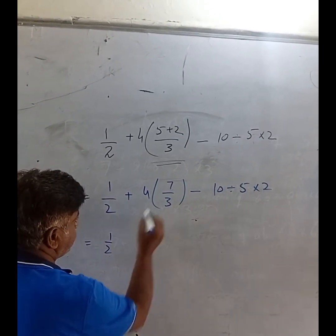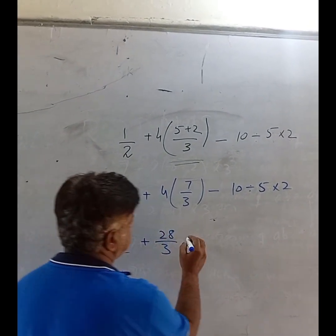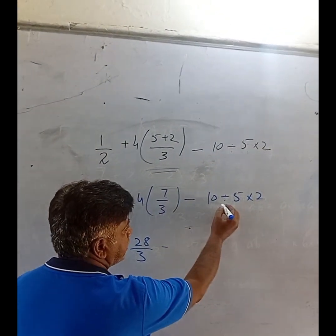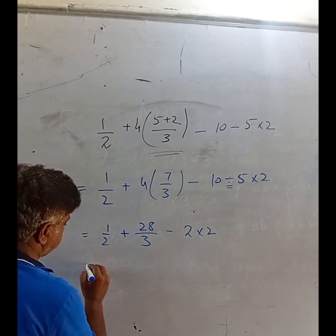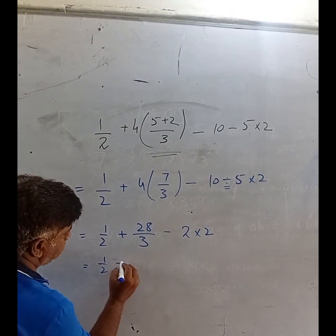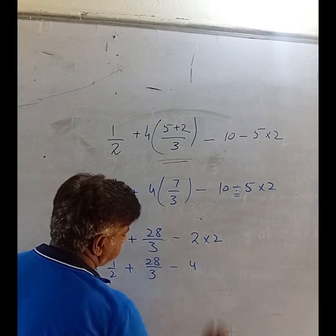1/2, now we will solve: 4 times 7 equals 28, divided by 3, minus we will divide, plus 5... 10 divided by 2 equals 5, multiplied by 2. So 1/2 plus 28/3 minus 4, right?